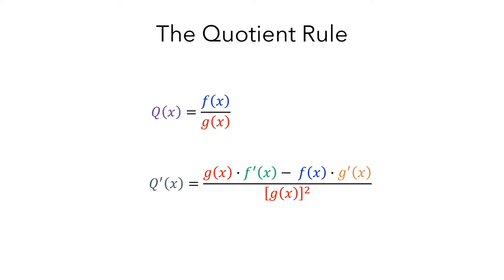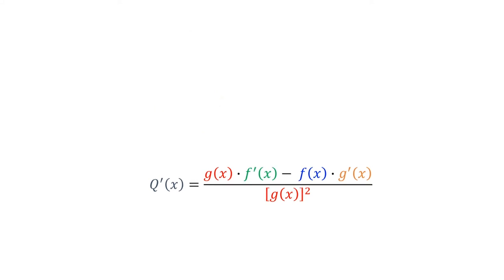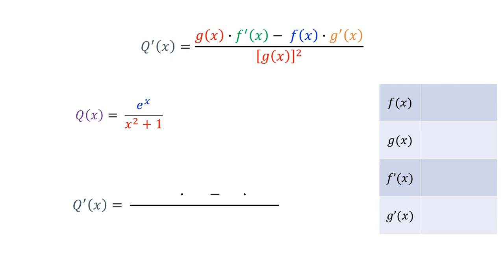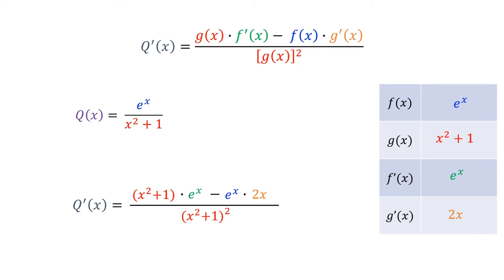Let's go through a couple of examples to see how this works in practice. I'll use a table to help us stay organized. Here is the function we were originally looking at, e to the x divided by x squared plus 1. So e to the x is our f of x, and x squared plus 1 is our g of x. The derivative of f of x is e to the x, and the derivative of g of x is 2x. The quotient rule says we multiply g of x times f prime of x, then subtract f of x times g prime of x, and divide by g of x squared. So this is the derivative of q of x.